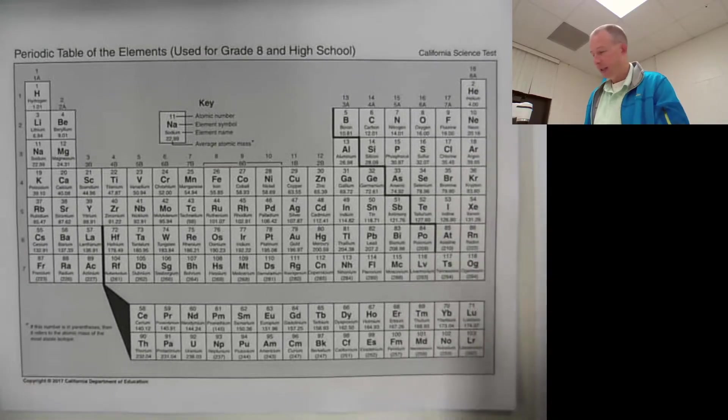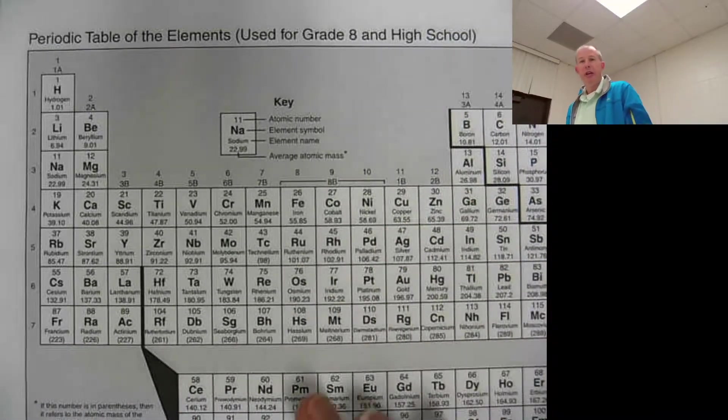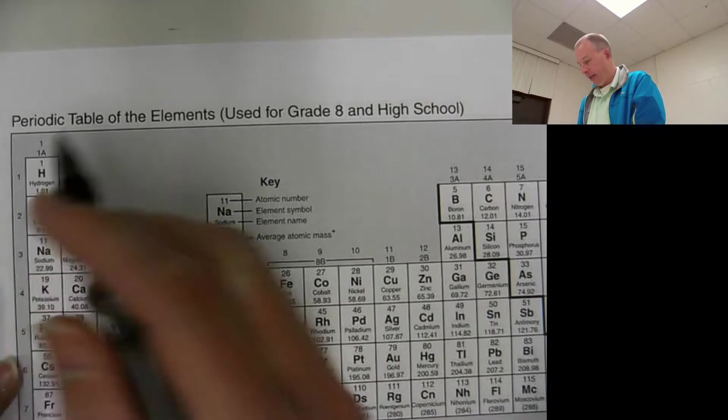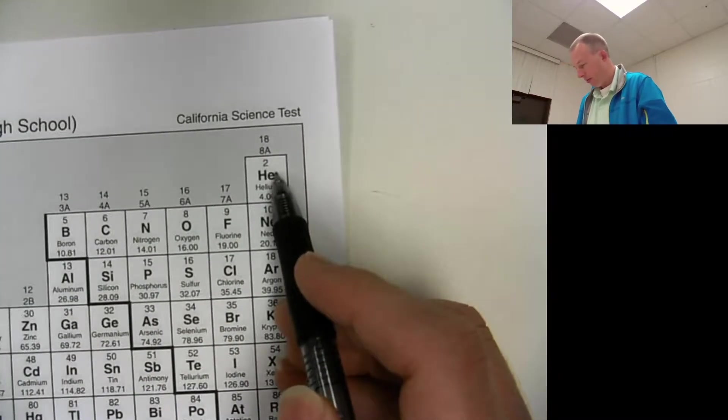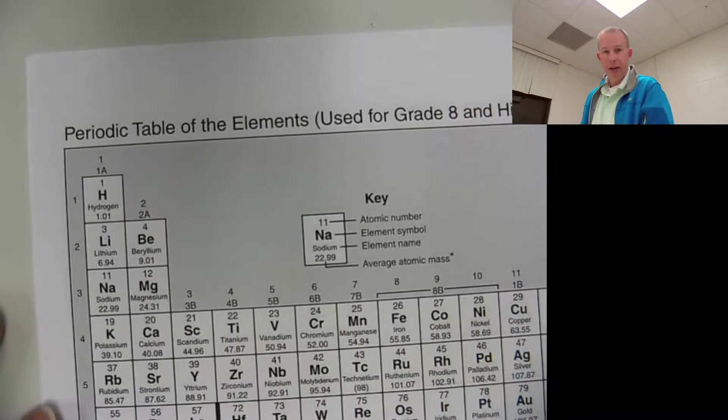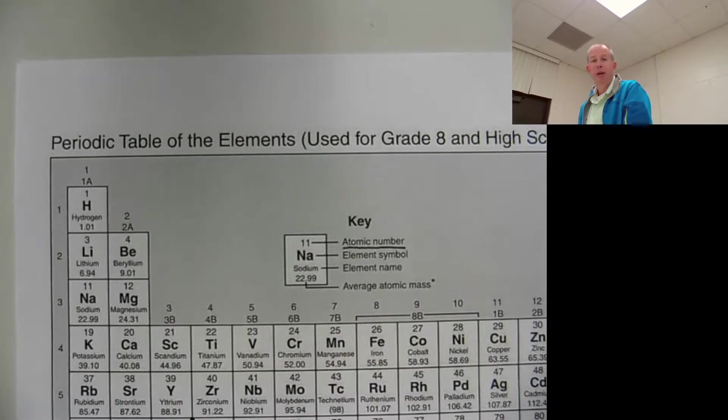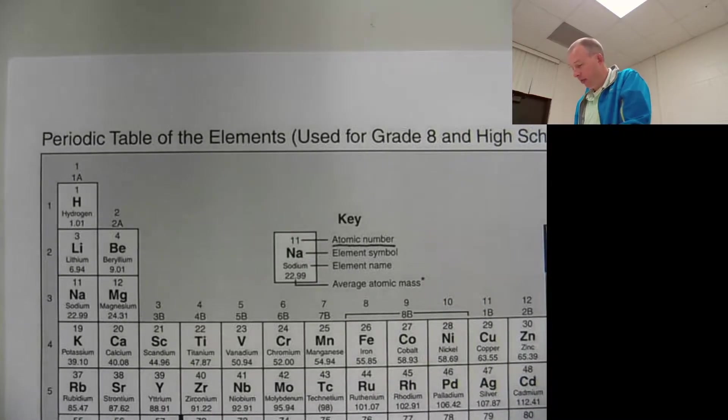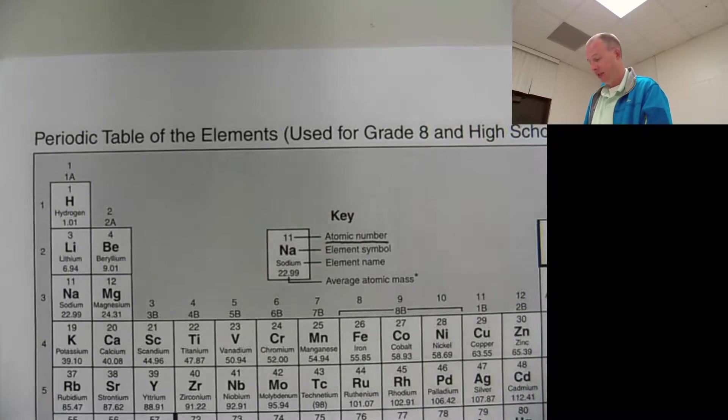So periodic table. All right, this is your periodic table. This is the one you'll be using. And you will see that the periodic table is organized by these numbers here. Specifically, it starts out with one that goes to three, four, five, six, seven, eight, etc. So that first number, that's the atomic number. That's this thing here. That's the most important thing on the table for each element. The reason is that that number identifies what is unique to an element.